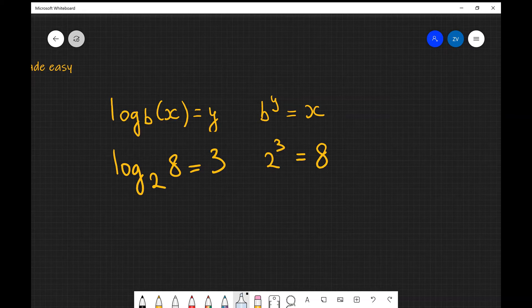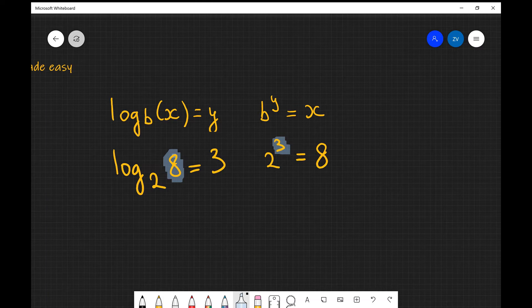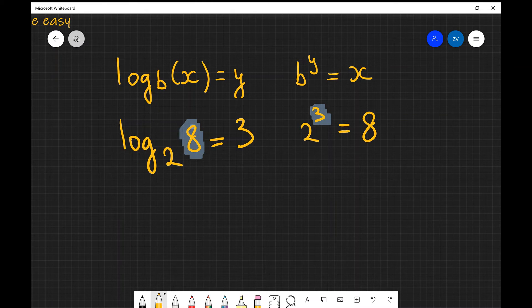So if we were to take the logarithm base 2 of 8, what we're actually going to get is that power. Now a couple of really important points to make is that this number here, 2 in this case, this is known as the base of the logarithm and this is given in b in that general equation above.